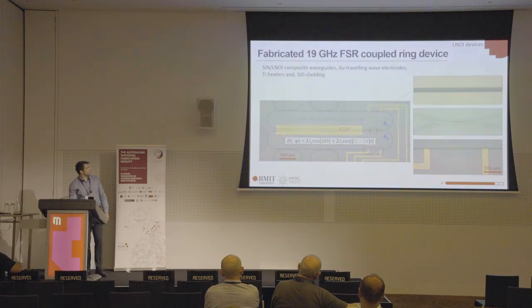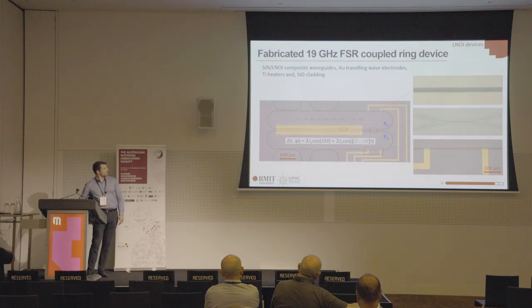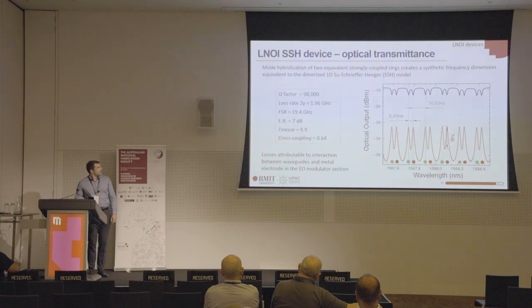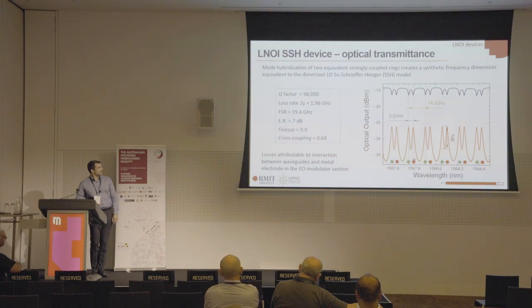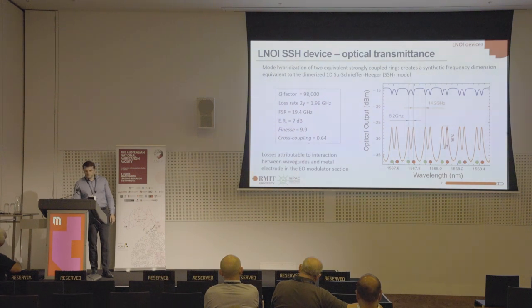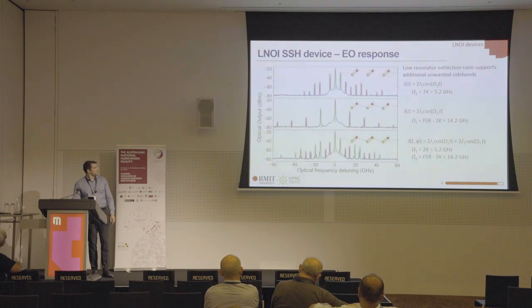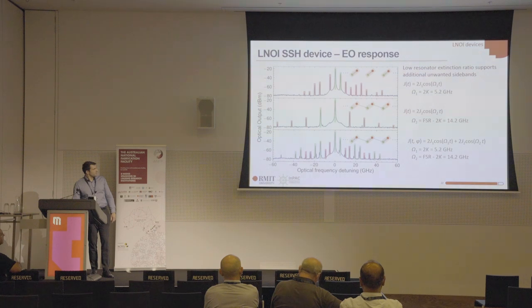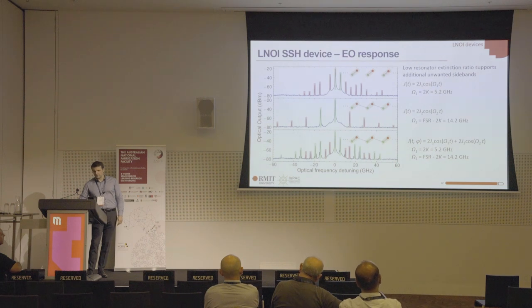A device prototype is shown here: two rings sharing a modulator and coupled together rather strongly, with heaters to tune the two rings into resonance with each other. The experimental transmittance shows the staggered coupling, modeling the desired staggered coupling range. Once driven and pumped, we get results close to the experimental expectation for two variants of a dimer and the SSH model, with some additional bands due to the limited extinction ratio of the cavities, highlighted in red.